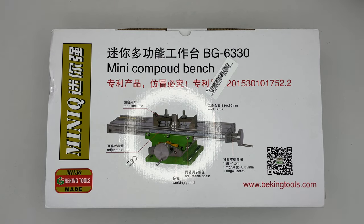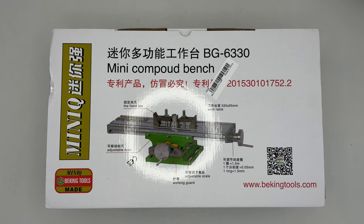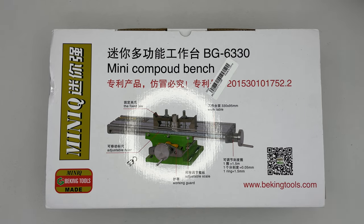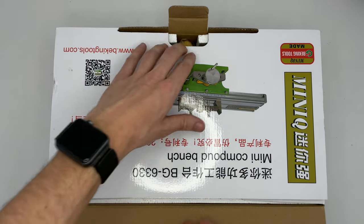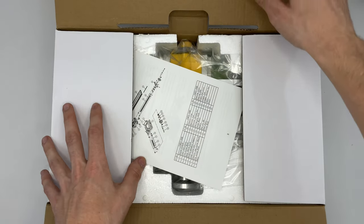Hello and welcome to a quick unboxing of the MiniQ BG-6330 Mini Precision Milling Machine Work Table Multi-Function Drill Vise Fixture Working Router Table from Banggood. I already have the bench drill and I'm upgrading it with this one here.